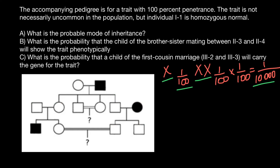Now let's think that this is an autosomal recessive genetic disorder. Then the genotype of this male has to be small a, small a, and the genotype of this female is going to be capital A, capital A. All children of this couple are going to be heterozygous, because from the mother's side they can only inherit the dominant allele, and from the father's side they can only inherit the recessive allele. So this female is heterozygous, this male is heterozygous, this female is heterozygous, and this male is heterozygous.